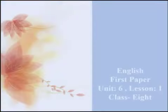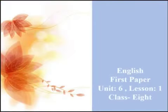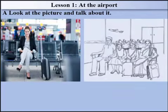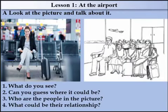Today I am going to discuss Unit 6, Lesson 1 from our textbook. Today's lesson is Lesson 1 at the Airport. Look at the picture and talk about it, and answer the following questions. Question 1: What do you see? Question 2: Can you guess where it could be? Question 3: Who are the people in the picture? Question 4: What could be their relationship?